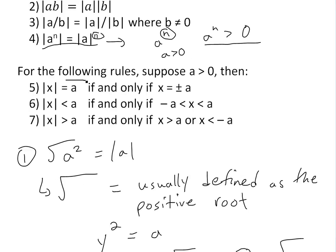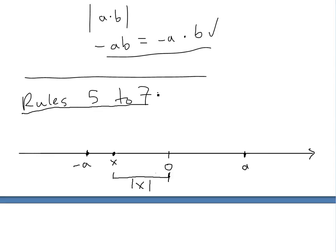This brings us to the last three rules, which are useful for many applications. Rule five: absolute value of X equals A if and only if X equals plus or minus A. Rule six: absolute value of X is less than A if and only if X is between negative A and A. Rule seven: absolute value of X is greater than A if X lies outside this region. Drawing a number line with zero at the center and A to the right and negative A to the left: the absolute value is the distance from X to zero. X equals A only when X is exactly at positive A or negative A.